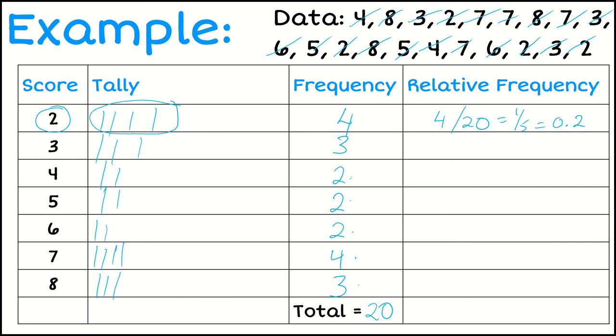The next one, so the score of 3, that's got a frequency here of 3. So that would give me a relative frequency of 3 out of 20, which I can't simplify the fraction. But I could turn that into a decimal of 0.15. Sorry, my brain just went blank.